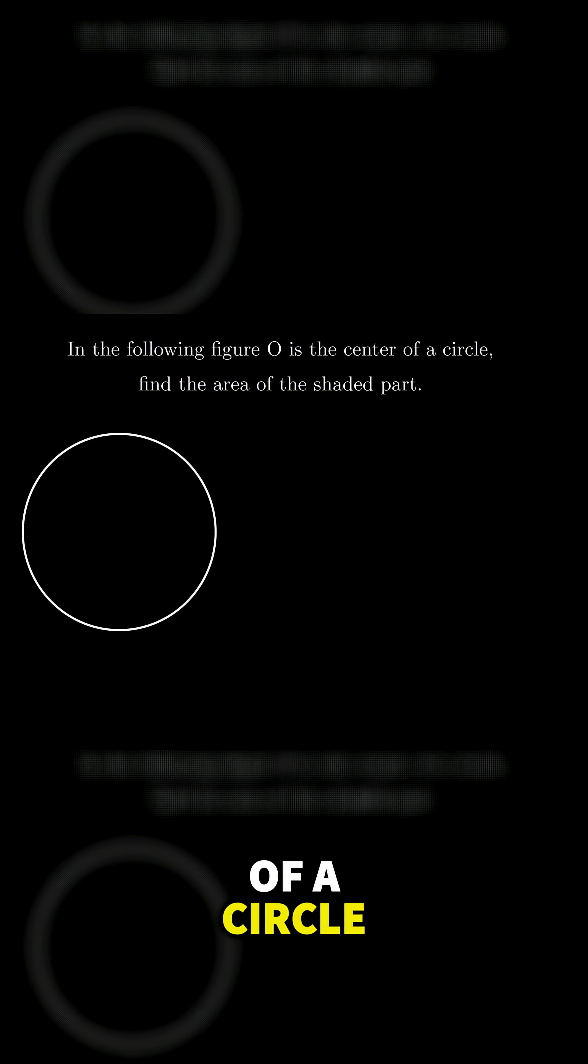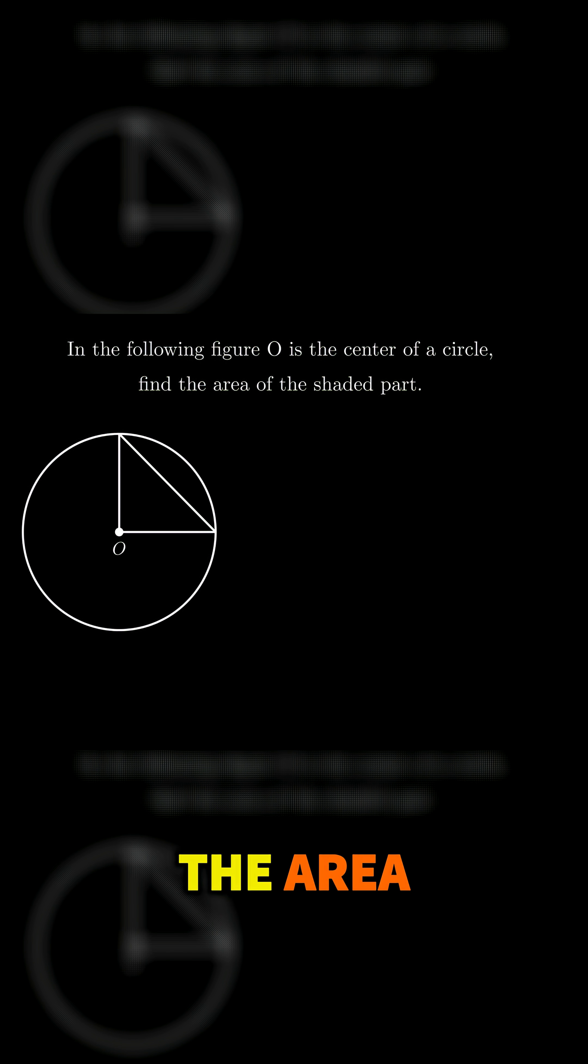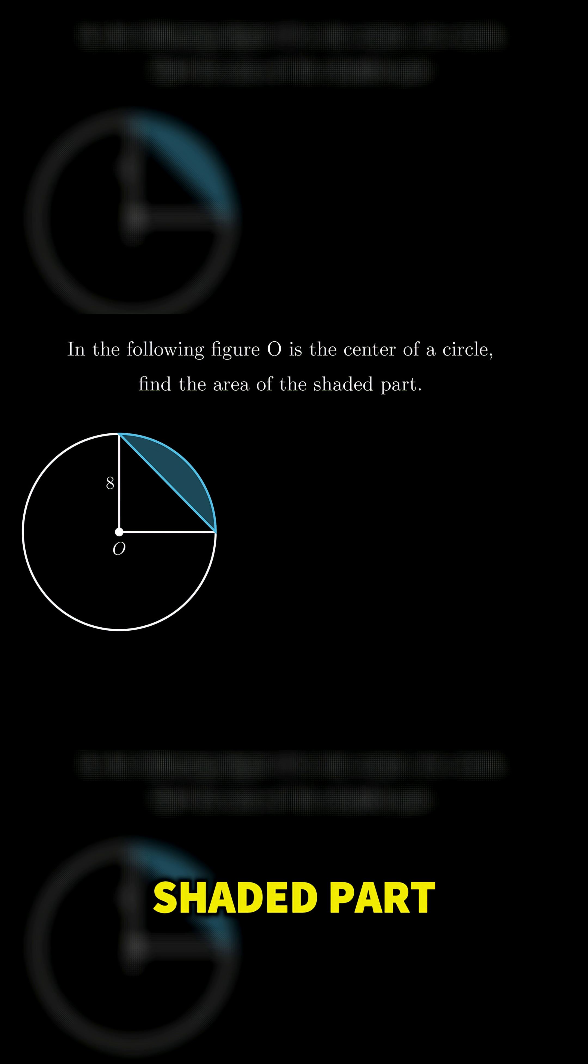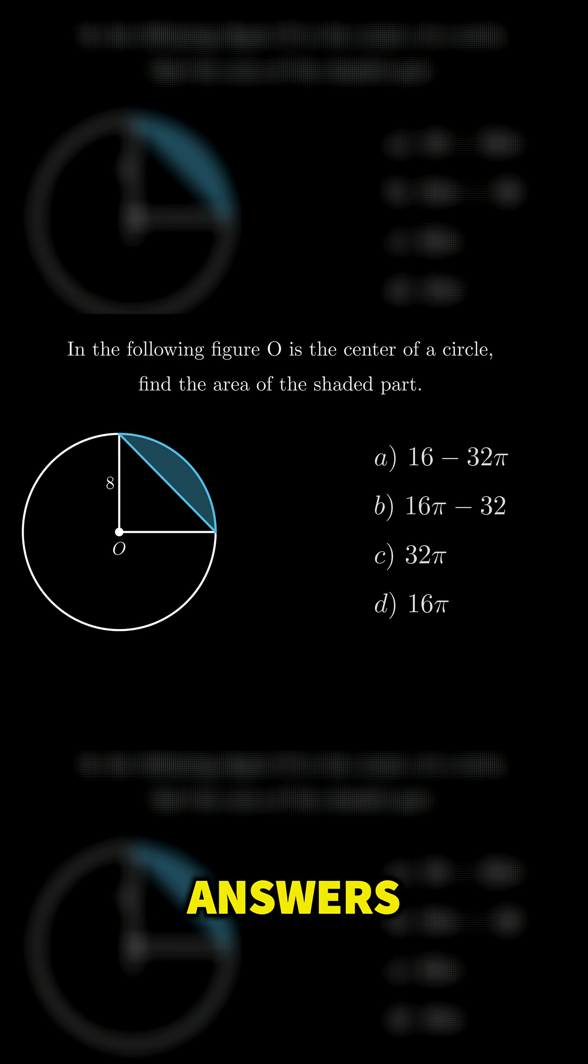In the following figure, O is the center of a circle. We need to find the area of the shaded part. Here are the possible answers.